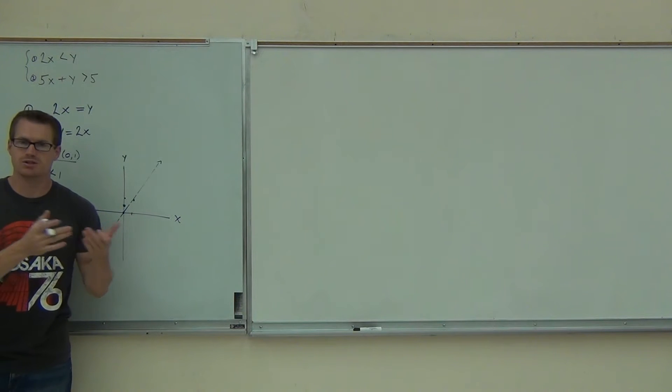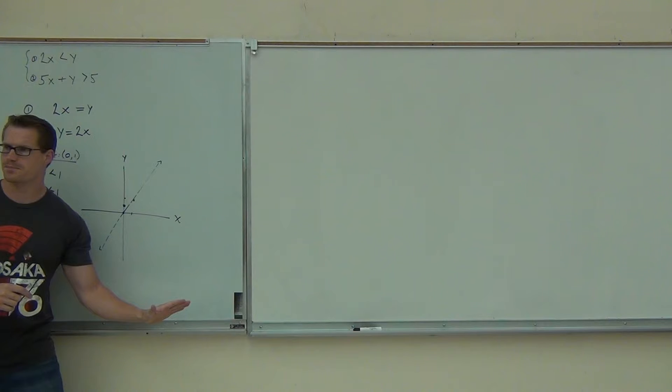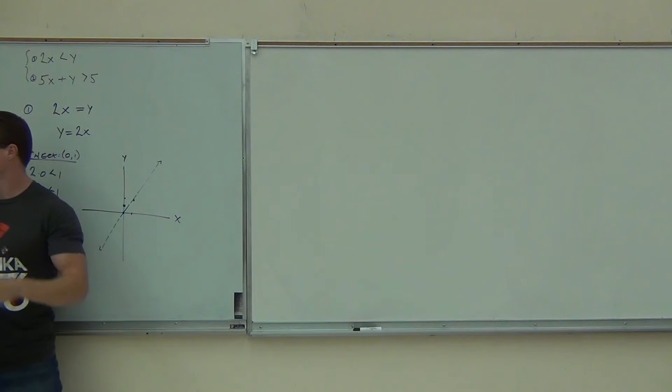That's important, right? That doesn't tell you what size you shade. So we just identified that we're checking zero, one. That's right here, zero, one. This point was true or false? True. So are we going to shade the top half or the bottom half plane? Which one? The top. The top. The point was true. That means all these points are true. We shade this part.